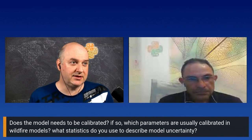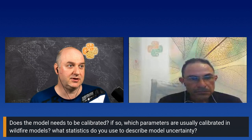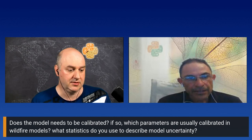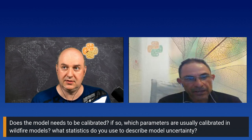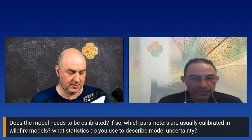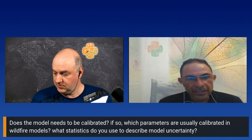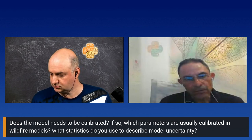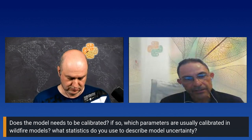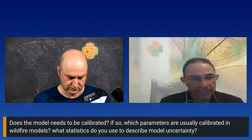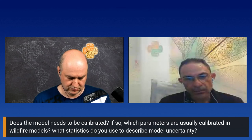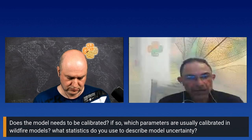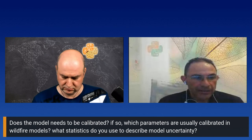Next question: does the model need to be calibrated, and which parameters are usually calibrated? What statistics describe model uncertainty? I use the fire behavior fuel model produced by the U.S. Forest Service — I simply download and use that data. For the r.ros and r.spread modules, I used default parameters in the notebook, but it could be very interesting to try different parameters depending on the study area.